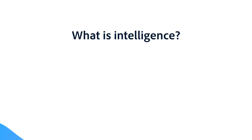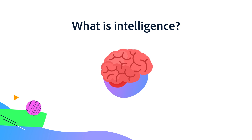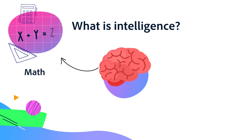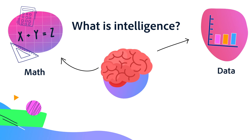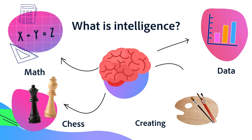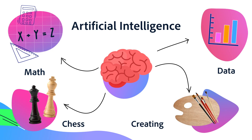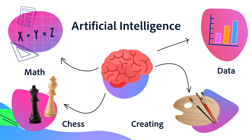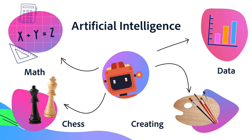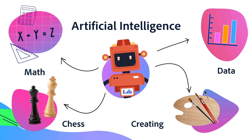Intelligence is usually associated with human tasks, like doing math, remembering large amounts of data, playing chess, or creating things. And so artificial intelligence is simply the name for when computers are able to do those kinds of intelligent tasks well.